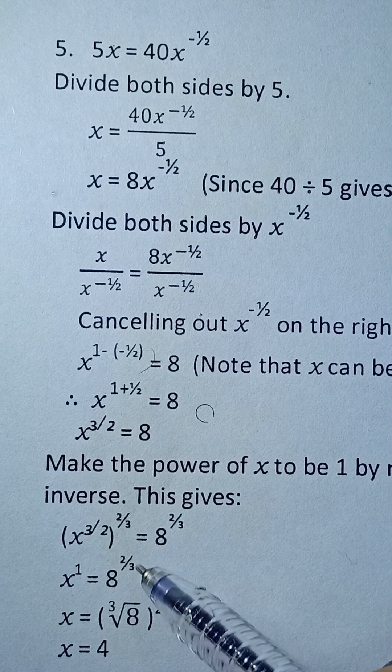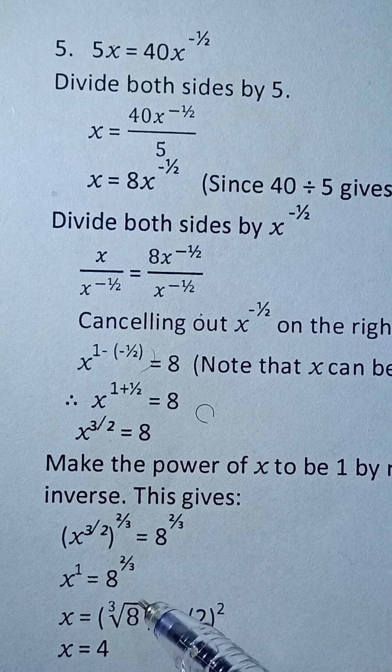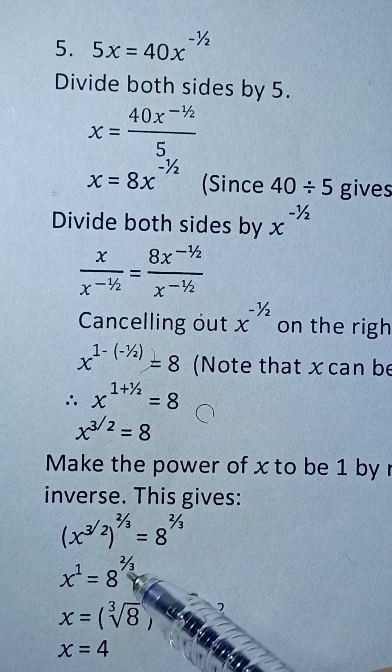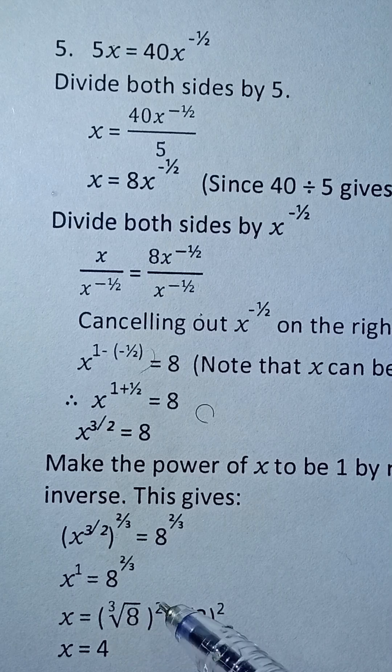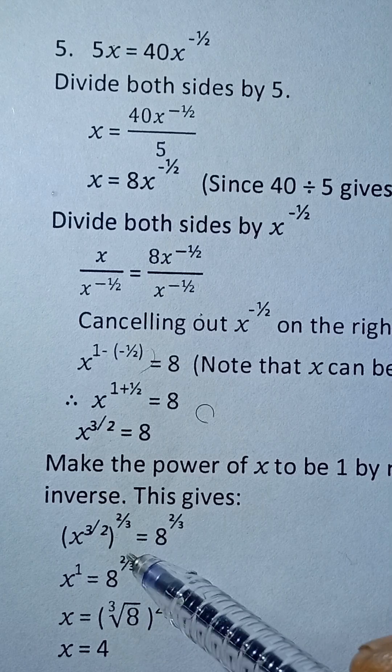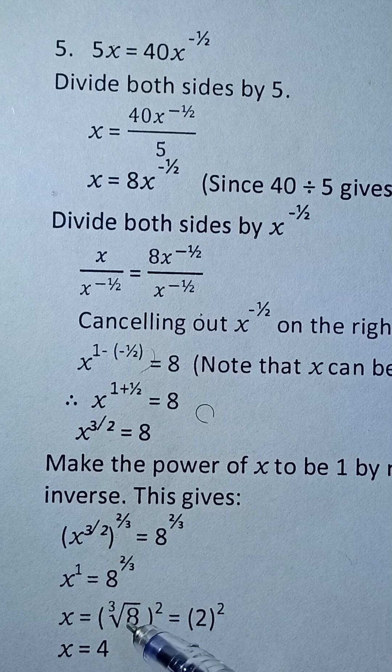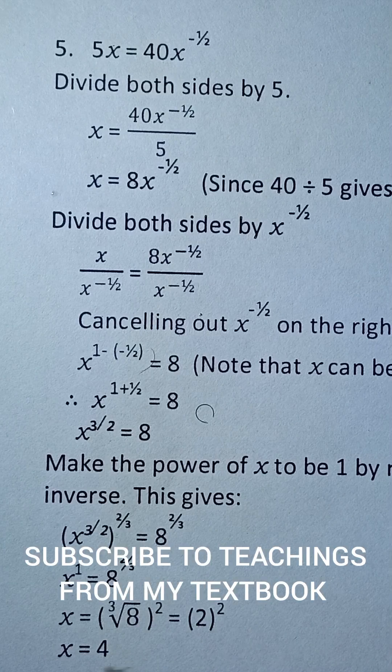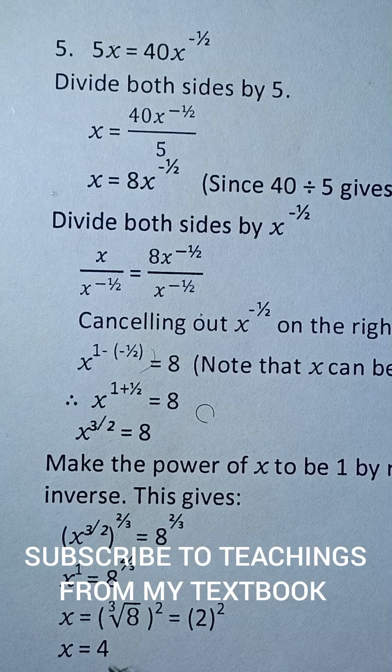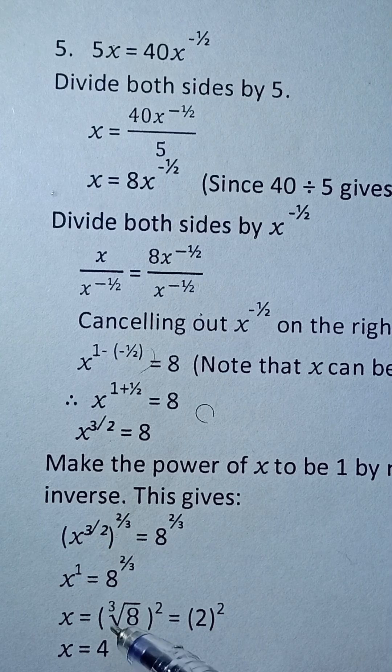So once we have x is equal to 8 raised to power 2 over 3, the next thing to do is to take the third root, that's the denominator. Now you take the third root of 8 and then all raised to the power of the numerator which is 2. So the third root of 8 is 2, and then 2 raised power 2 is 4. So that gives us the final answer as 4.